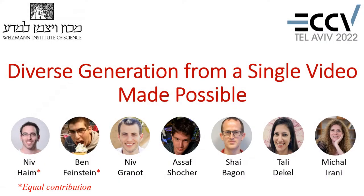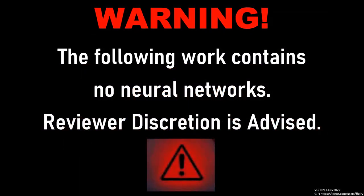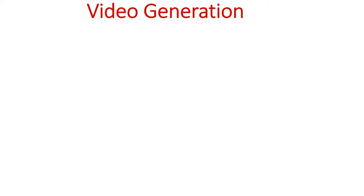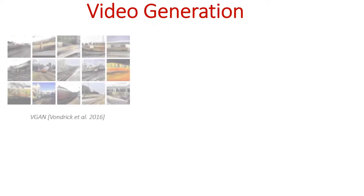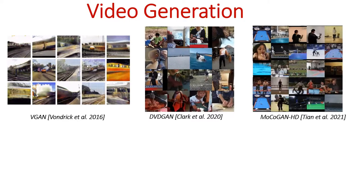Diverse generation from a single video made possible. Unconditional generation of videos is mostly achieved with generative adversarial networks, with early works like the seminal VGAN and more recent state-of-the-art like DVDGAN or MOKUGAN.